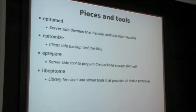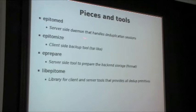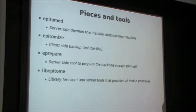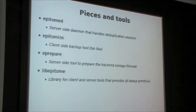Here are the actual tools. First is EpitomeD, which is basically a service daemon. Each connection that comes in forks a session, negotiates parameters, and then the client can start chatting to it. The client tool is Epitomize, which has a TAR-like quality to it — the flags are mostly the same as TAR with only one or two additional flags. Then there is ePrepare, which is basically just preparation of the backend. There's a little bit of work that needs to be done before you can start running EpitomeD. It's a one-time deal — you can compare it to a format. You basically format the backend so that you can use it to store chunks of data.